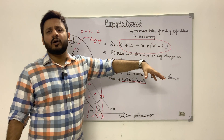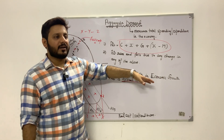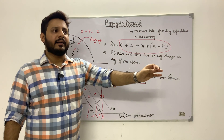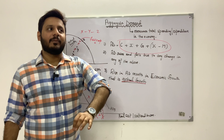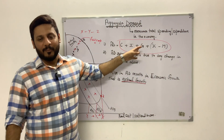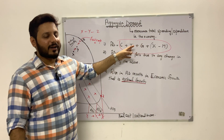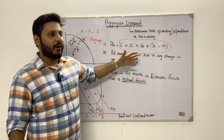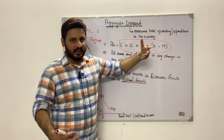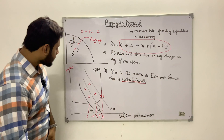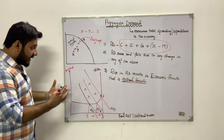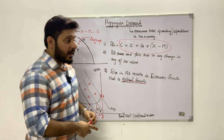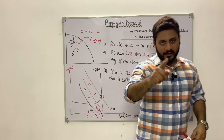Whatever the case, just remember that aggregate demand measures total spending or total expenditure in the economy. Don't write in your AS or A2 exam that aggregate demand equals total demand, and don't consider AD = C + I + G + NX as a formula — it just represents the components or sources from which spending is derived. I hope you enjoyed the video and understood it. See you in the next one — take care.